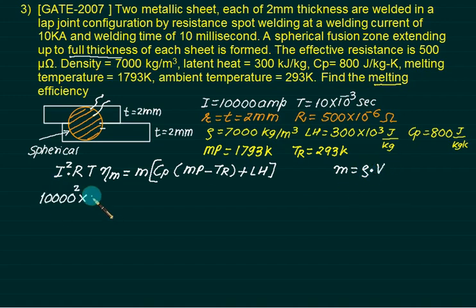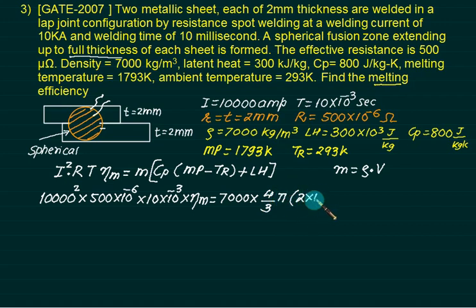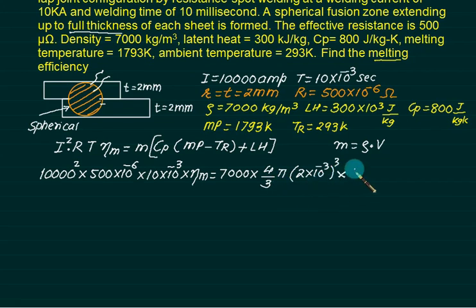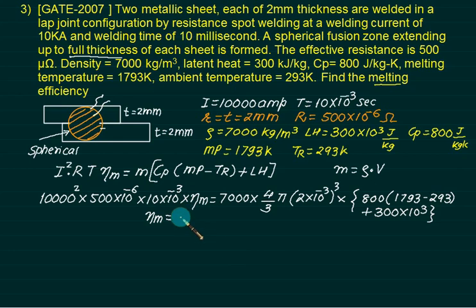Let's substitute and solve. I equals to, resistance is 500, time is 10 millisecond, efficiency we don't know. Density is given as 7000. Volume is 4 by 3 into pi R, R is 2 into 10 to the power minus 3, cube of this. Multiplied by CP 800, melting point 1793, room temperature 293, plus latent heat 300 into 10 to the power 3. So melting efficiency will come out to be 70.37%.